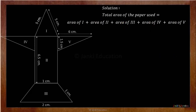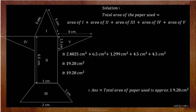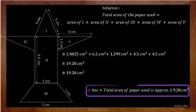Now we will add all the respective results: area of 1 plus area of 2 plus area of 3 plus area of 4 and plus area of 5. You can see here I have taken two different values for area of 4 and 5 separately, whereas we have previously multiplied it with 2 just for the calculation part. So it gives us an approximate answer of 19.28 centimetre square, and that is our answer — the total area of paper used is approximately 19.28 centimetre square.